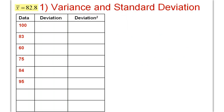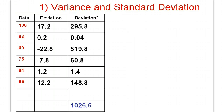We went ahead and did it by hand, and I'm about to show you how to do it on the calculator. But let's make sure these are the values we got by hand first. I rounded everything to the nearest tenth, so your answers might be slightly different if you used more decimals, but it should be pretty close. Did you guys get something close to what I have for the sum of the squares?